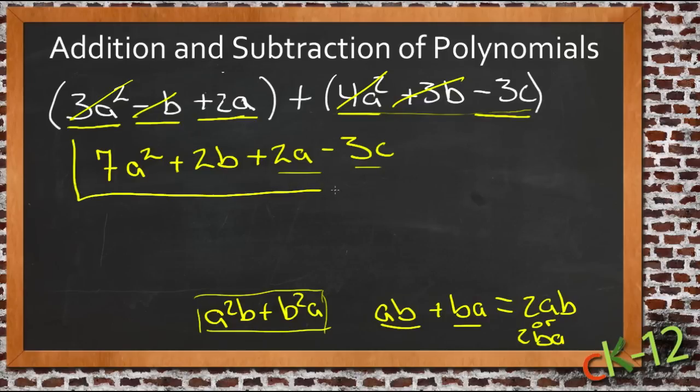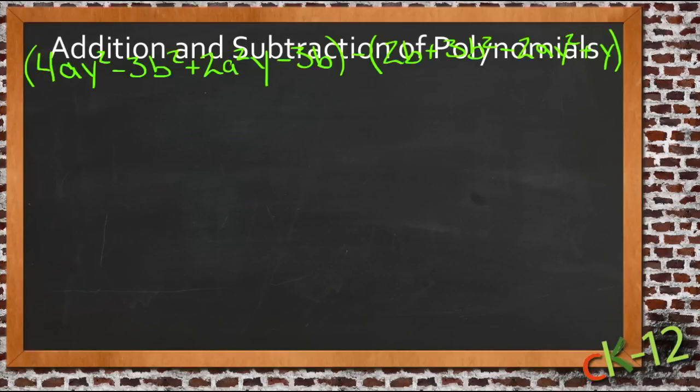So our answer then is 7a squared plus 2b plus 2a minus 3c. And all we're doing is grouping the things together that match. Let's take a look at one more example here.